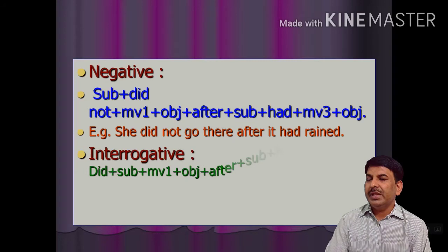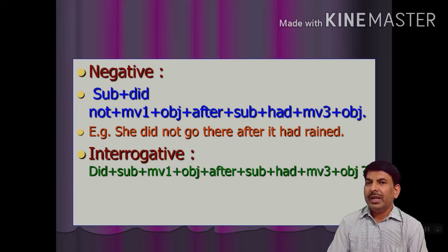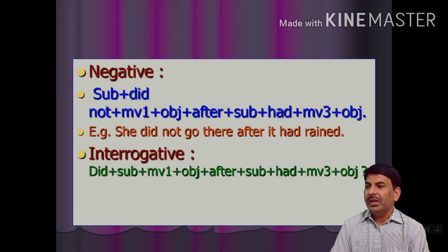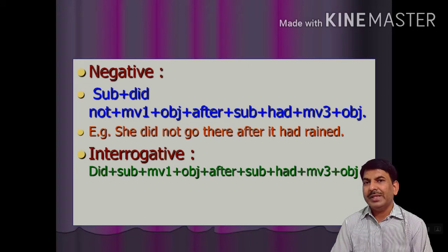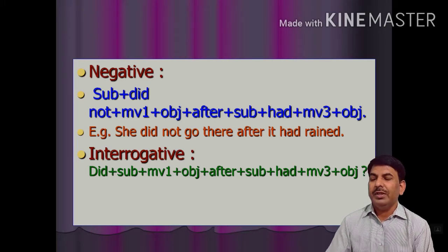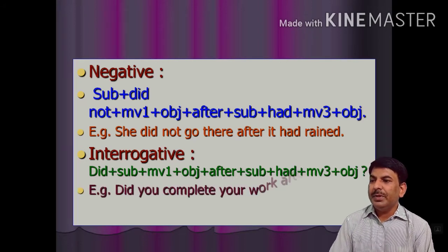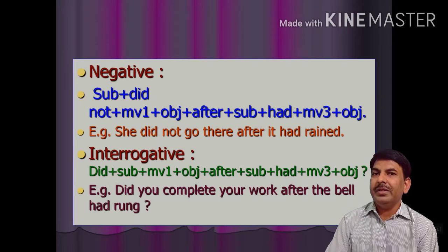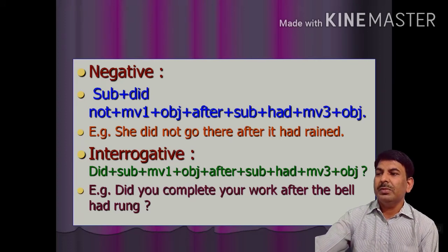Let us have the rules of interrogative sentences. The sentence begins with the helping verb 'did': did + subject + first form of the main verb. Whenever 'did' comes in a sentence, you have to use only the first form of the main verb, also known as present form. Then: object + after + subject + had + past participle + object + question mark. Example: 'Did you complete your work after the bell had rung?' The first clause belongs to simple past and the second clause belongs to past perfect tense.